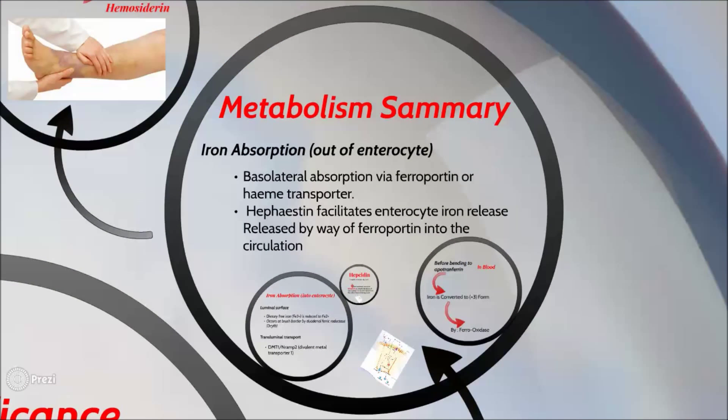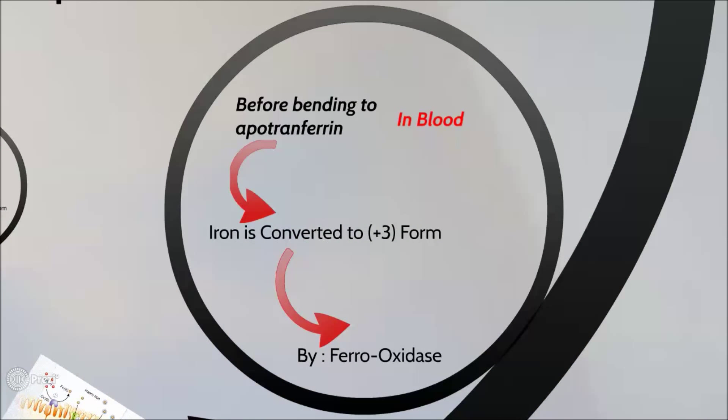Inside the enterocyte, iron has two fates. First, iron is transformed into ferric form and aggregated in a protein called ferritin. The second fate is that iron crosses the other border by ferroportin or heme transporter. This iron is then transported by transferrin again to reach bone marrow, where it is used to make hemoglobin. The absorption is facilitated by a protein called hephaestin.